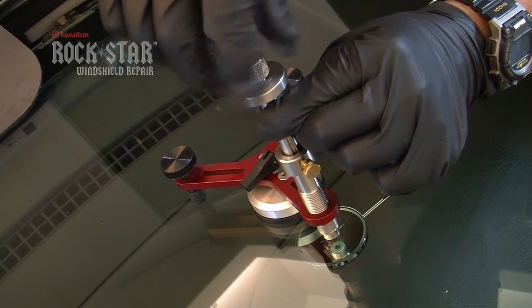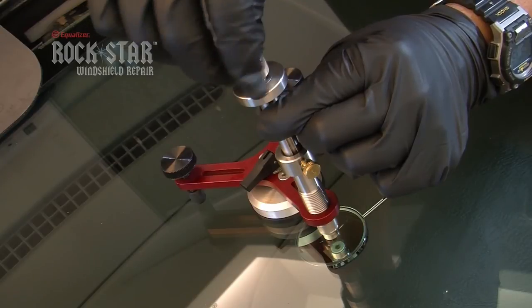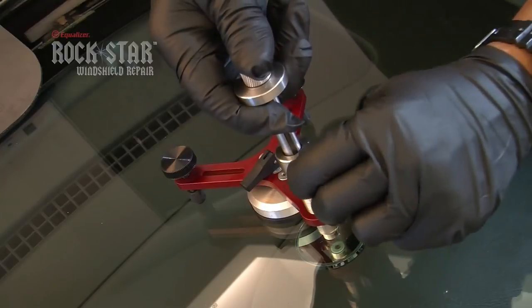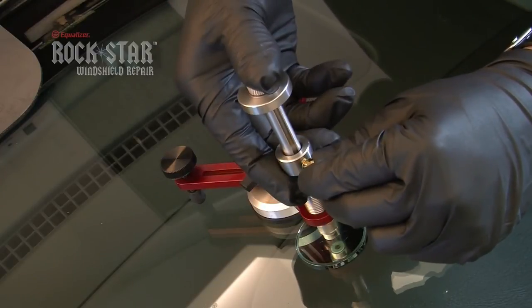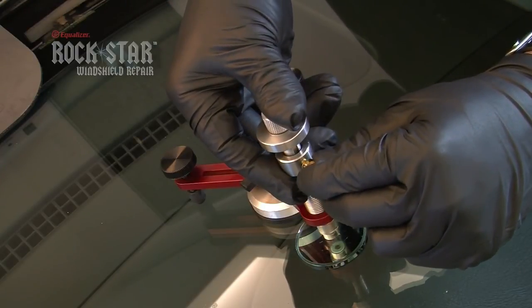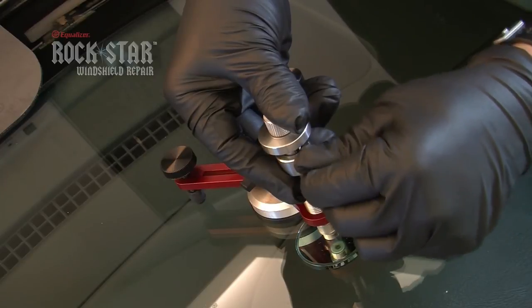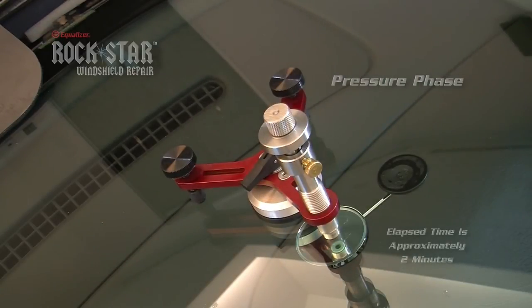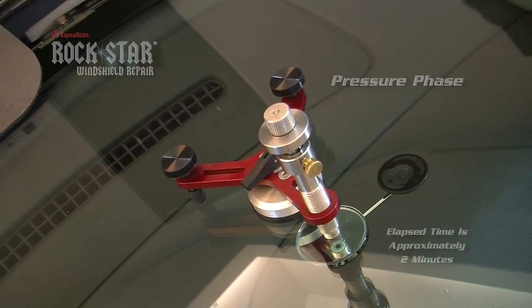Release the vacuum by loosening the injector pressure rod. Then retighten the injector pressure rod to secure the seal. Loosen the retaining screw and push the injector in a downward motion until the point when you feel resistance. Then tighten the retaining screw. You are now in pressure phase. Hold pressure for two minutes.